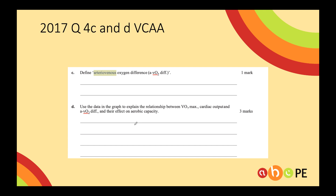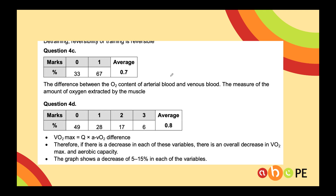Here's a question from 2017 worth looking at — it asks you to define AVO2 difference, and the answer is really the amount of oxygen extracted by the muscle. That shows how important it is. VO2 max is probably the best test of aerobic fitness, and the formula for VO2 max is Q (cardiac output) times AVO2 difference — Q being the amount of blood pumped around the body, and AVO2 difference being the amount of oxygen the muscles can utilize. AVO2 difference plays a really big part in how good your performance is going to be.